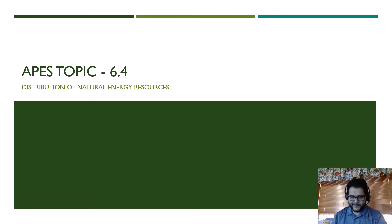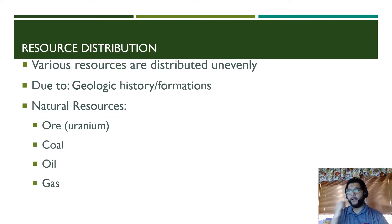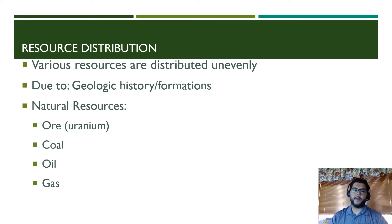Hey guys, it's Mr. V and this is APES review video topic 6.4: the distribution of natural energy resources. One of the things to think about here is that resources are not distributed evenly around the globe. Some countries have much more of a certain energy source than others, and it's not due to any country being better or worse — it's typically because of the geologic history and the formations of them.